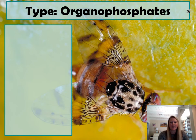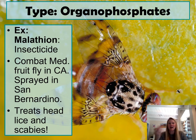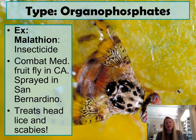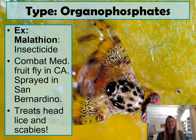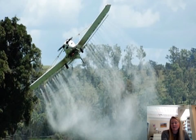That leads us to our next type of pesticide: the organophosphates. A very famous organophosphate you may have heard of is malathion, which is an insecticide. It's commonly used to treat lice and scabies, but it's also used to combat fruit flies. Here in Southern California, there's a lot of produce — many areas are known for their citrus trees with orange trees and lemon trees. There was a Mediterranean fruit fly introduced into that area, and one of the ways they combated it was by spraying malathion. Farmers can also use what are called crop dusters to apply the pesticide.